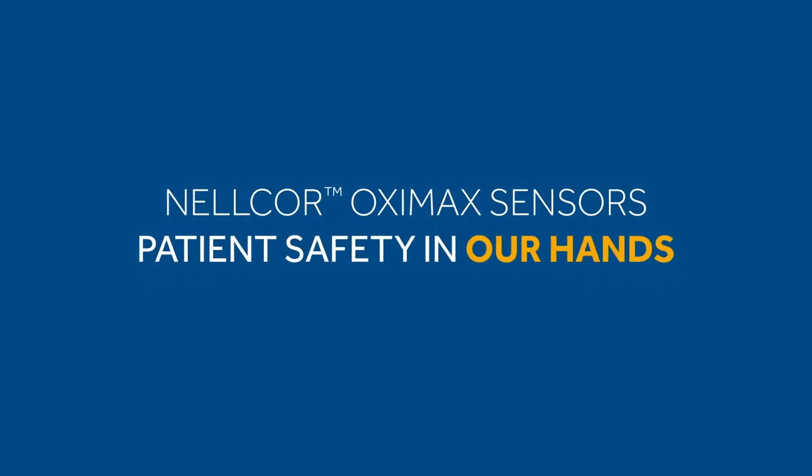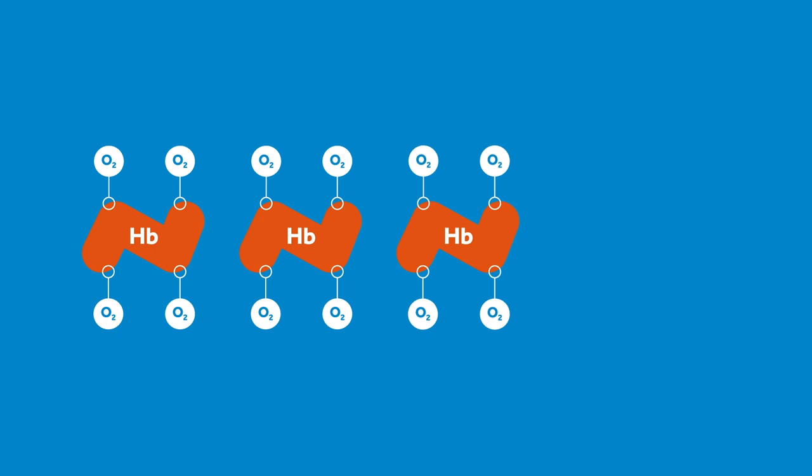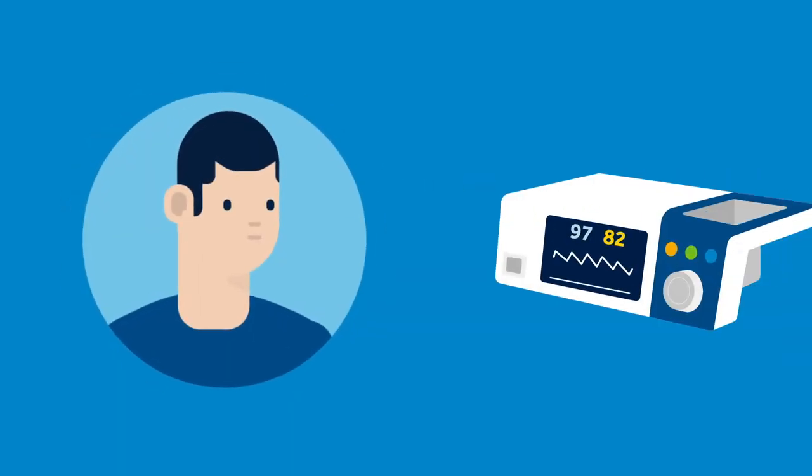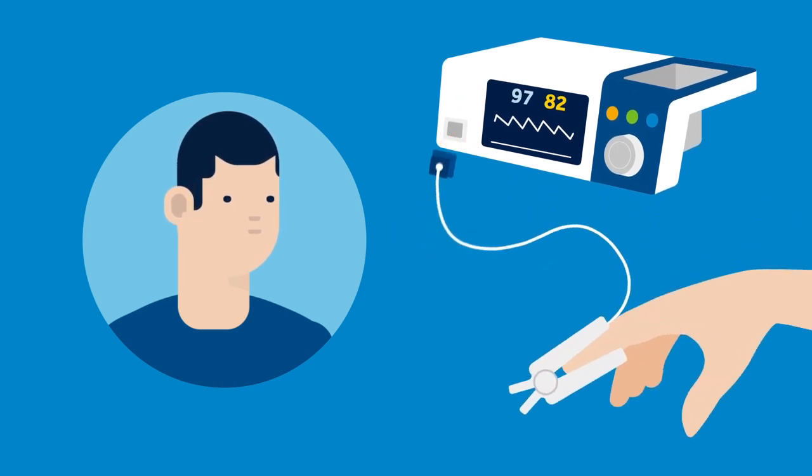This is a pulse oximeter training video. Pulse oximetry is a simple non-invasive method of monitoring the percentage of haemoglobin which is saturated with oxygen. It is measured by a monitor which analyses the physiological signal captured from a probe.